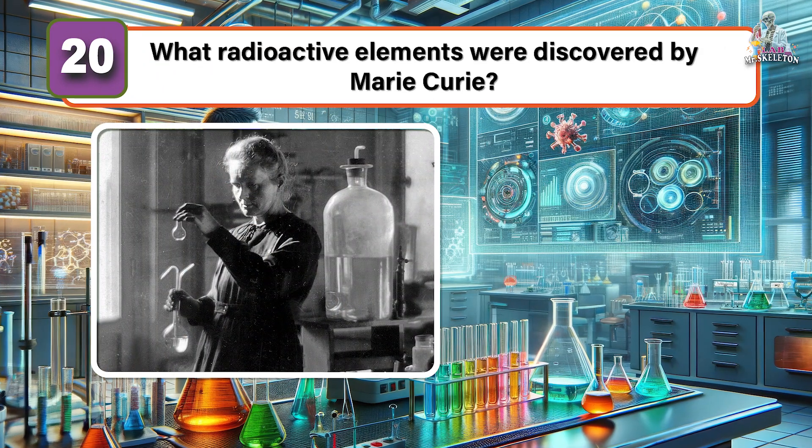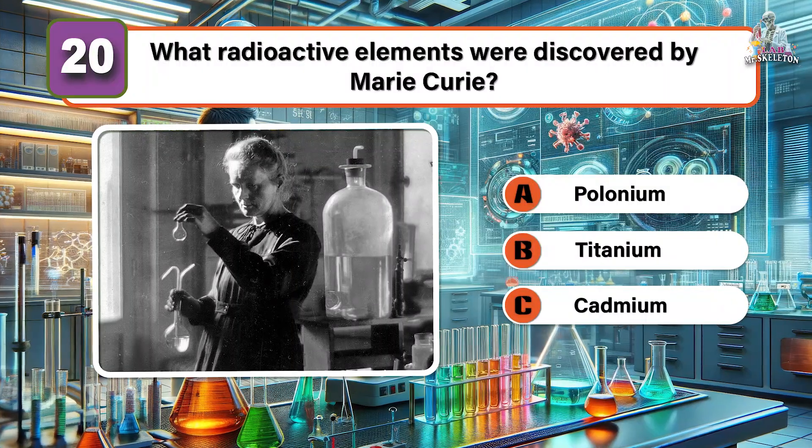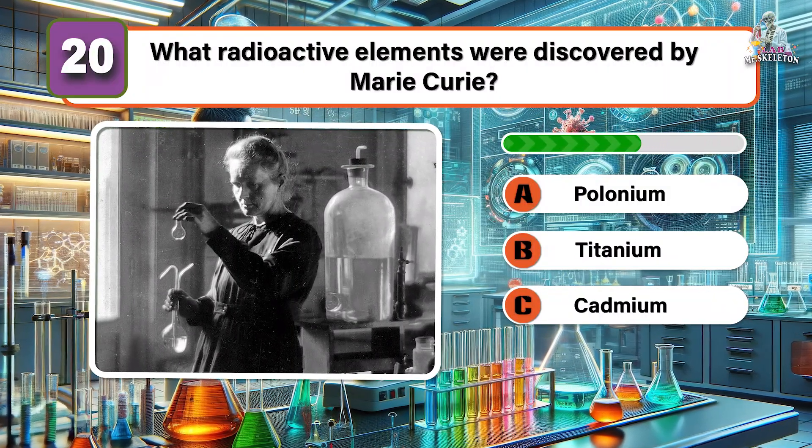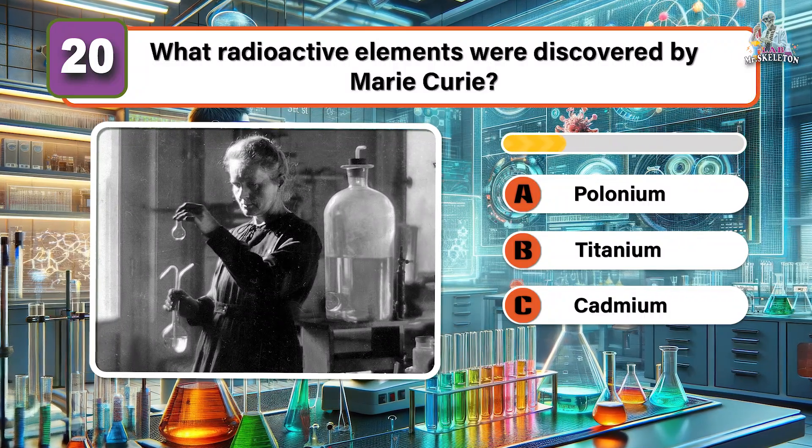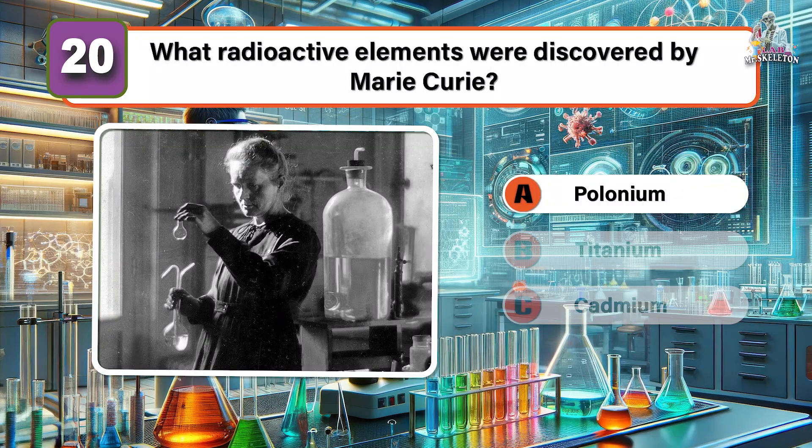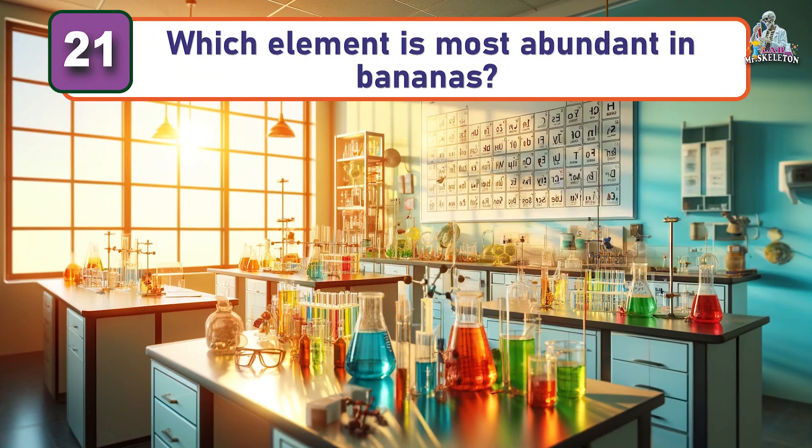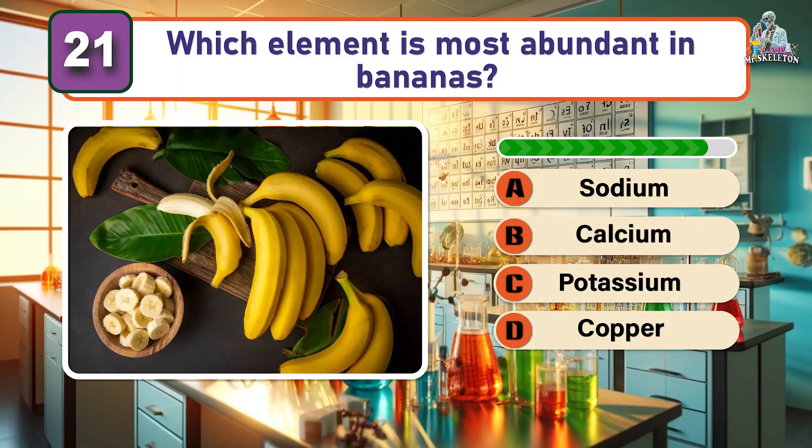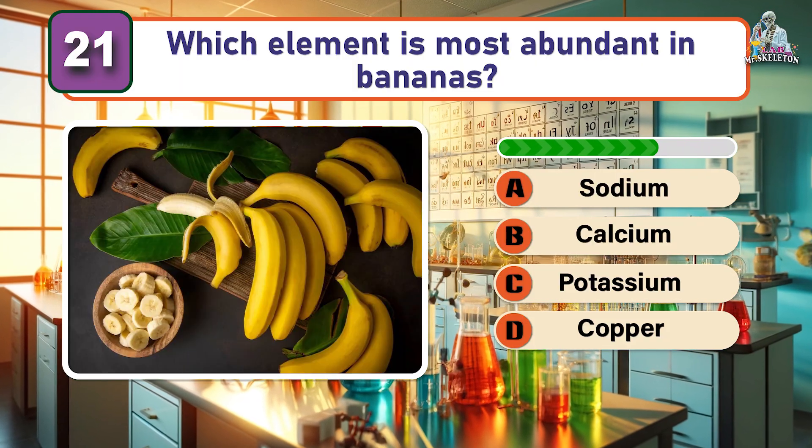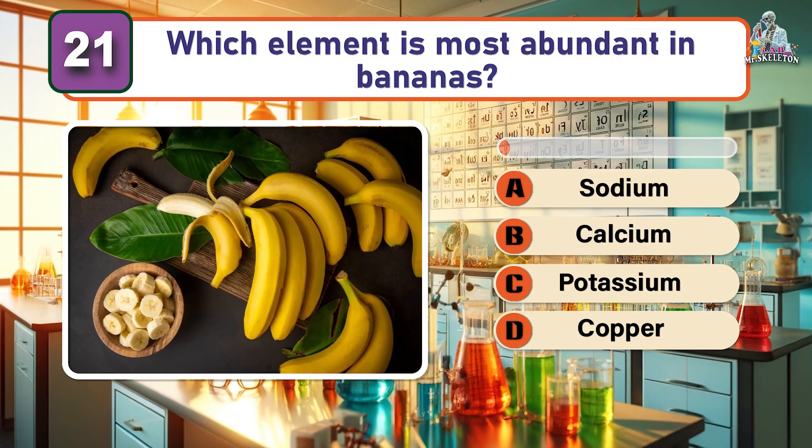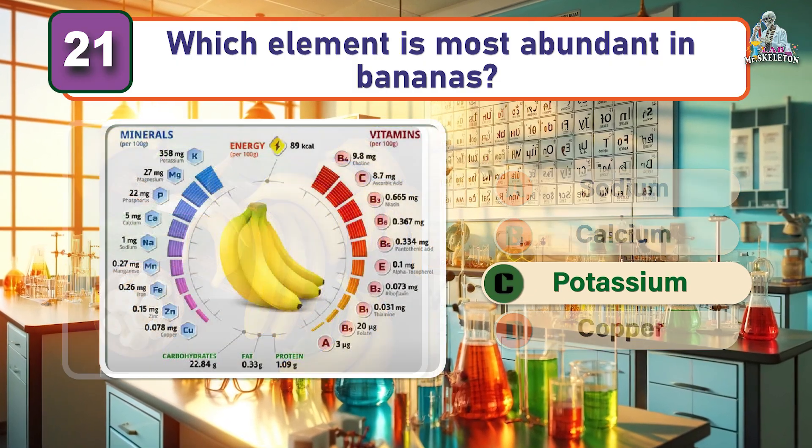What radioactive elements were discovered by Marie Curie? Polonium, named after her homeland Poland. Which element is most abundant in bananas? Potassium.